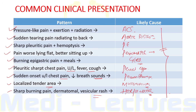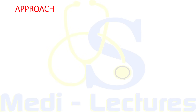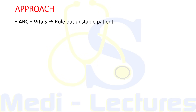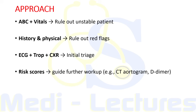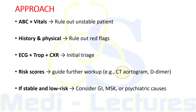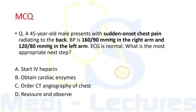To summarize with a simple algorithm for OPD and emergency: first assess airway, breathing, circulation, and vitals to determine if the patient is unstable — such as in shock or with severe tachycardia. If stable, take history and physical examination to rule out red flags. ECG, troponin, and chest X-ray are done as initial triage; these scores guide further workup like CT angiogram and D-dimer. If stable and low risk, consider GI, musculoskeletal, or psychiatric causes of chest pain. With this, we have completed our discussion on approach to chest pain. There is an MCQ in the comment section — thank you.